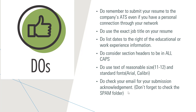Third, list dates to the right of your education or work experience. For instance, if you worked at a company for two years, write the duration — such as September 2018 to September 2020 — on the right side of the job role entry.